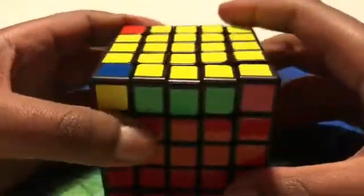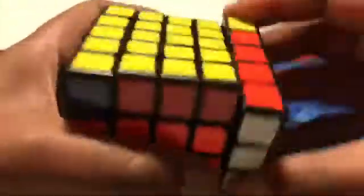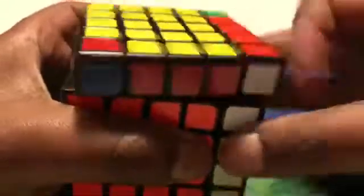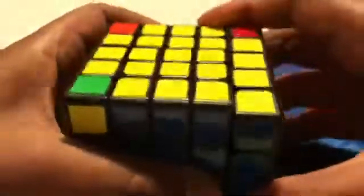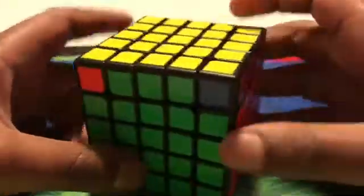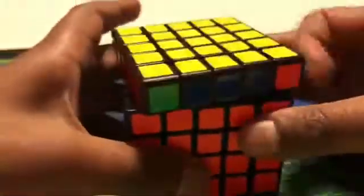Okay, now we have the cross. So then we do this algorithm. Okay, then after we do that algorithm, we have the yellow side solved.